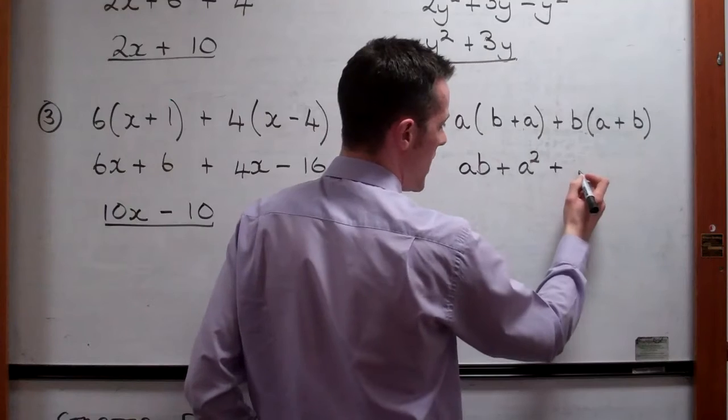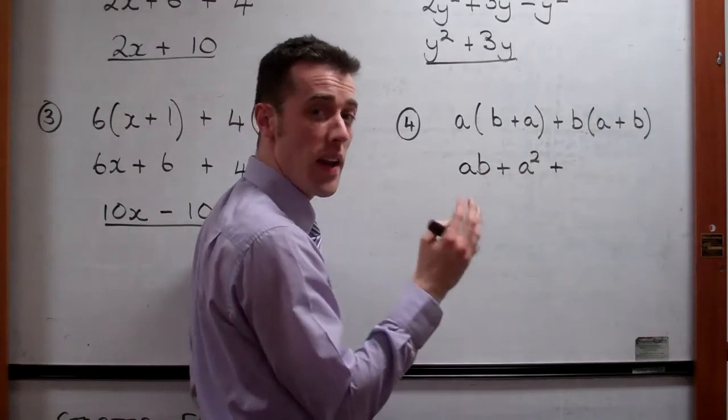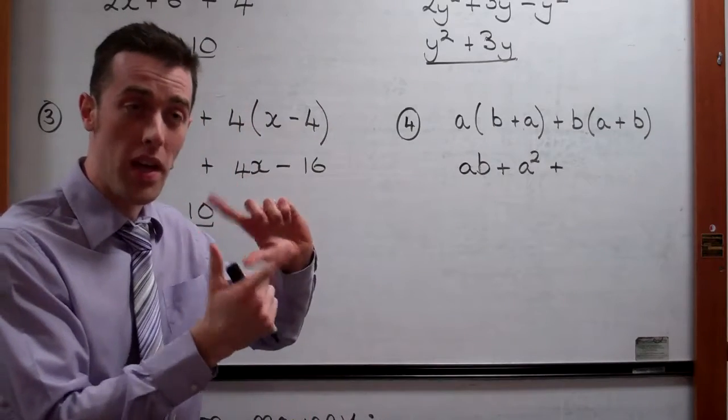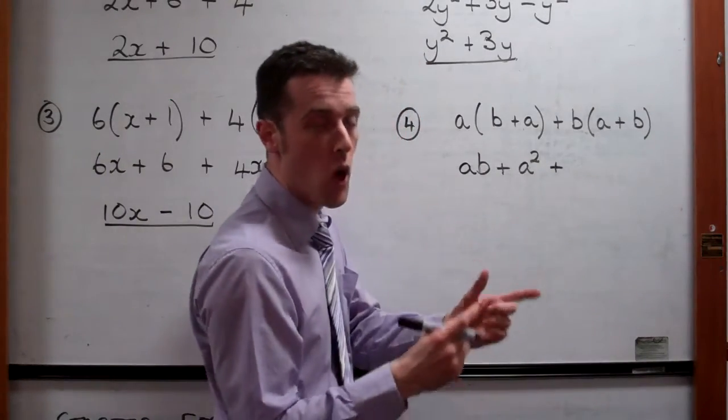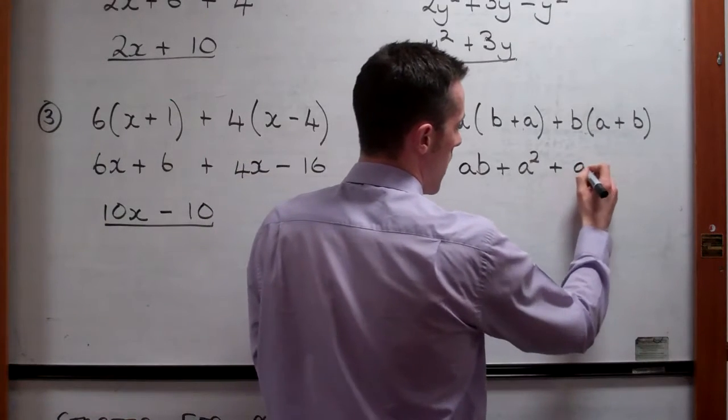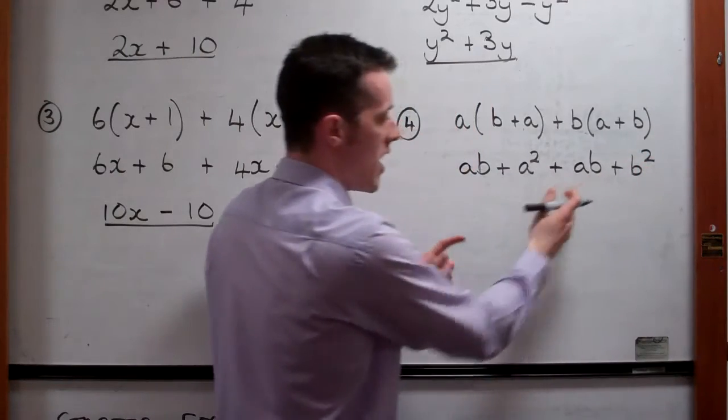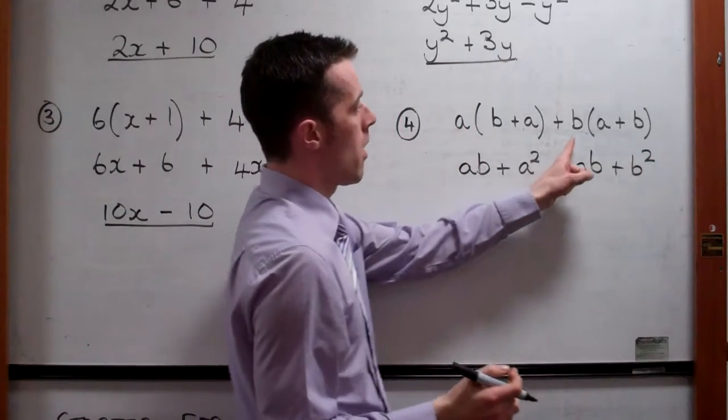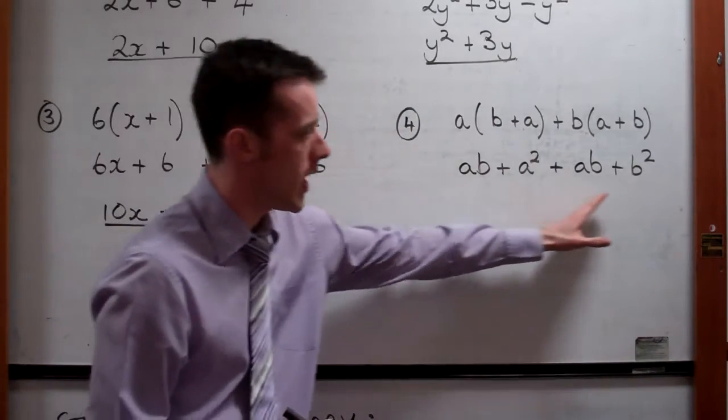Plus b times a. Now, that gives us ba. And ab and ba are exactly the same thing. So we could write down ba or we could write down ab. But they're both the same. I'm going to keep it alphabetical and I'm going to write ab. B times b gives us a b squared. So now we've got to add together anything we can.